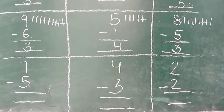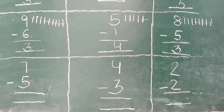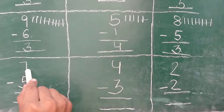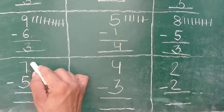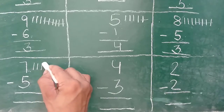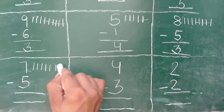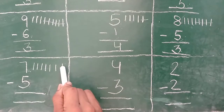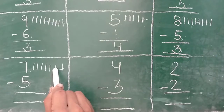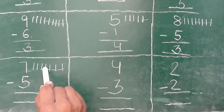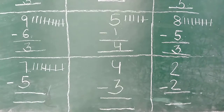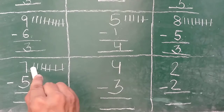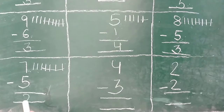Next sum. Sabhi bachche dhyan se dekhenge. Kitna number hai? Seven. Toh kya karenge? Seven lines draw karenge. One, two, three, four, five, six, seven. Ab kya karenge? Five lines cross karenge. One, two, three, four, five. Remaining lines kitni hai? One, two. Answer is two.